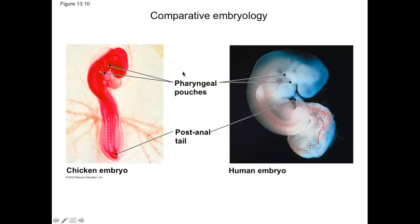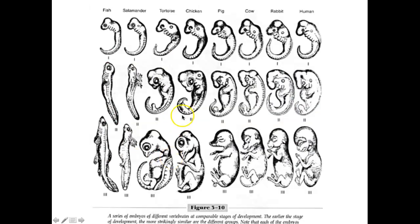We all have what are called pharyngeal pouches — basically gill slits — in the early embryo. These would develop into gills if you were a fish. Along the way, organisms start to diverge in their development: humans will lose the tail and the gill slits, while fish retain them. Looking at embryology shows us the similarities in development and points to relatedness between these different vertebrates.